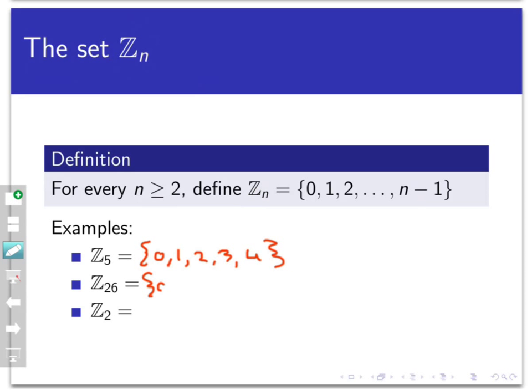Z26 would be the set of integers 0, 1, 2, 3, 4, 5, 6, and so forth, all the way up to 25. Again, we don't include 26 in this set, but it has a cardinality of 26, which is why we use 26. And Z2 would just be the set 0, 1. Very useful in computer science applications where we're talking about binary representations of things. That's the set Z2.